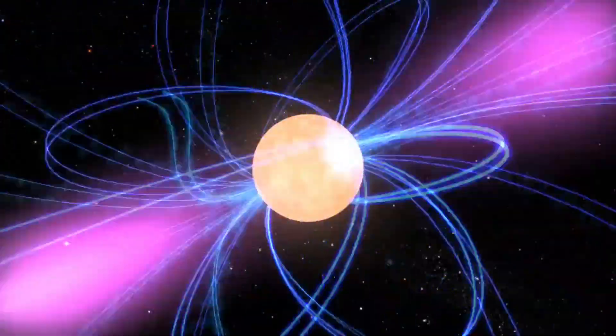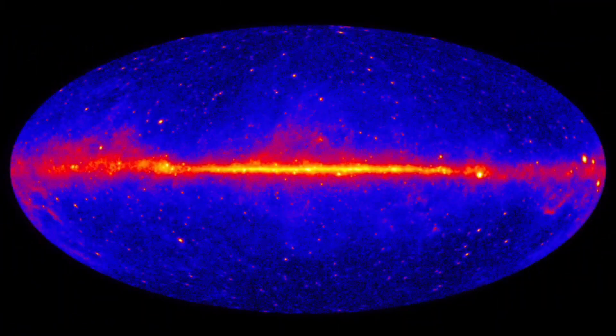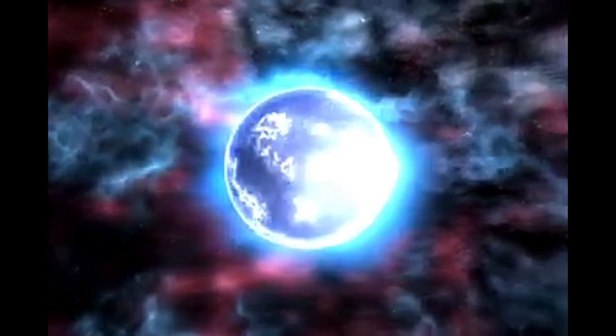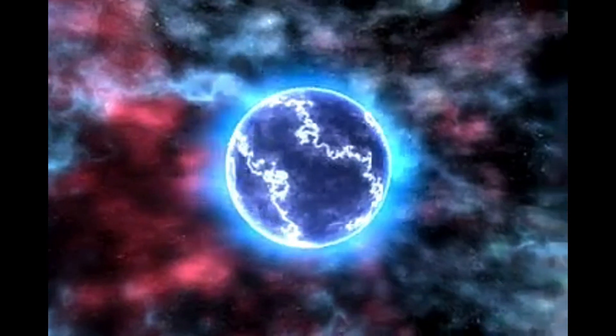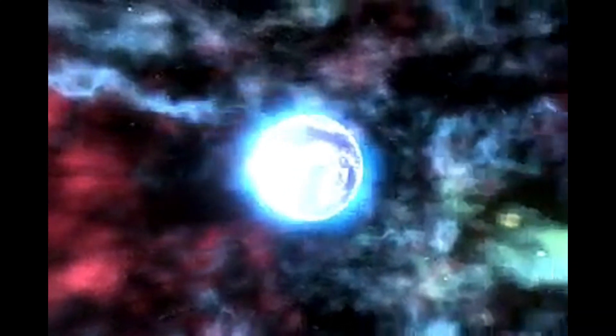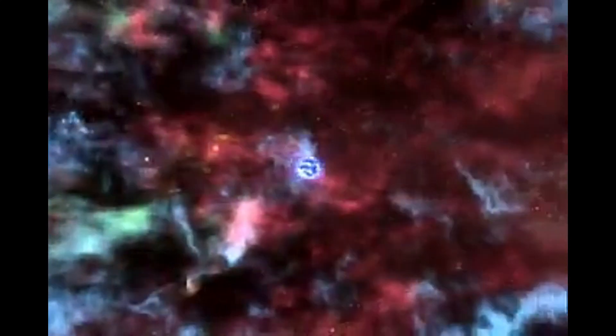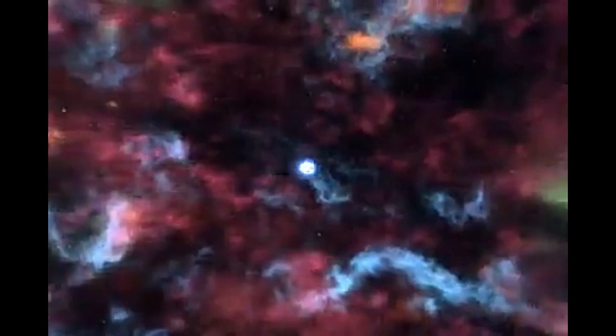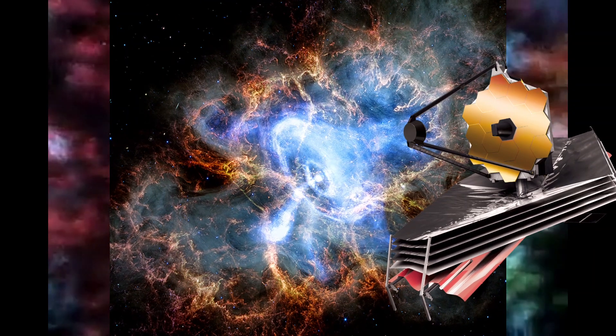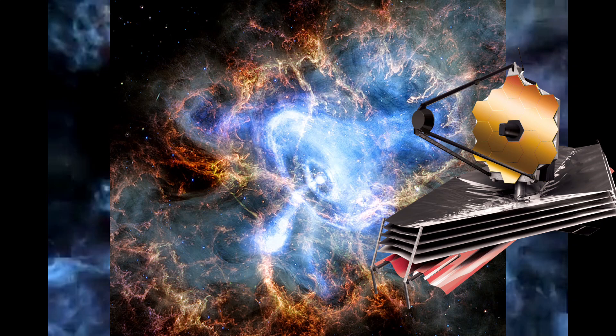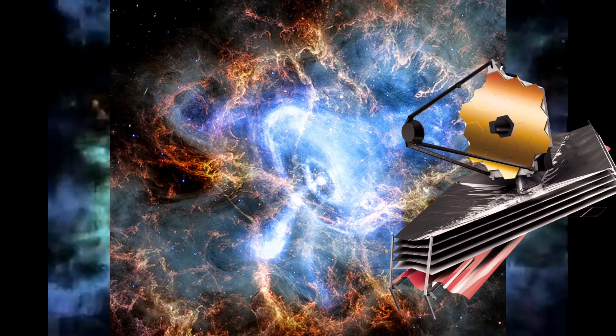Over the years, Chandra has revealed a superfluid inside Cass A's neutron star, shown that the original massive star might have turned inside out as it exploded, and contributed to understanding how massive stars explode. Chandra has also mapped elements from the star, now seeding the next generation of stars and planets. Recently, Chandra data combined with NASA's James Webb Space Telescope helped unravel the origin of mysterious structures within the remnant.